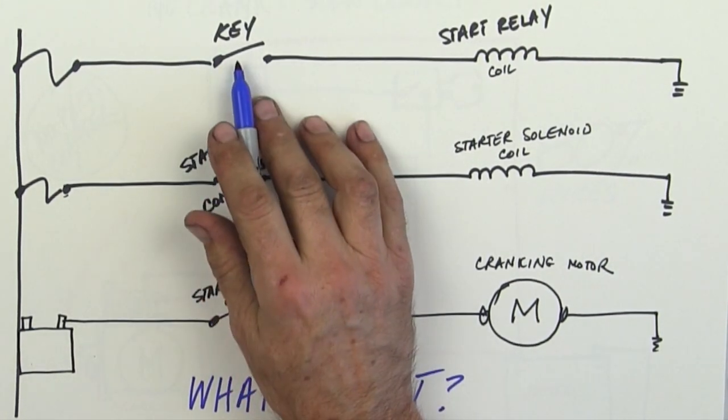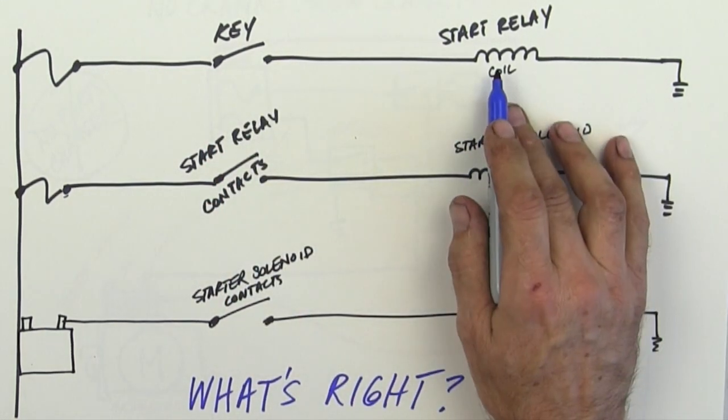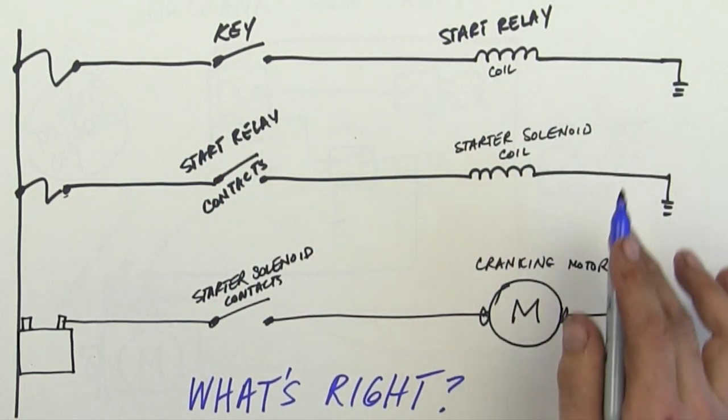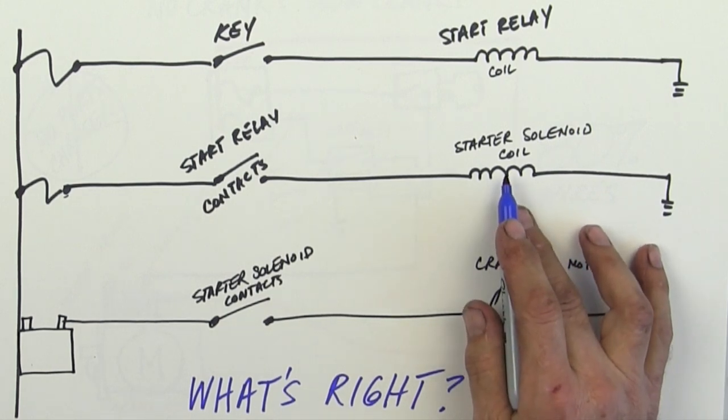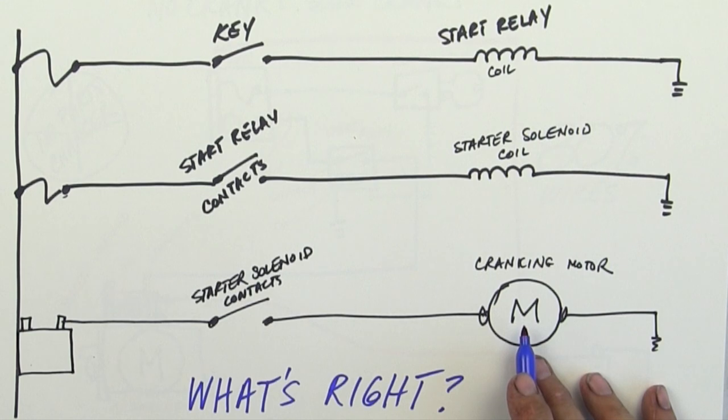So the key is hard to get to. The start relay is not. The starter solenoid is easy to get to. And the cranking motor is pretty easy to get to.